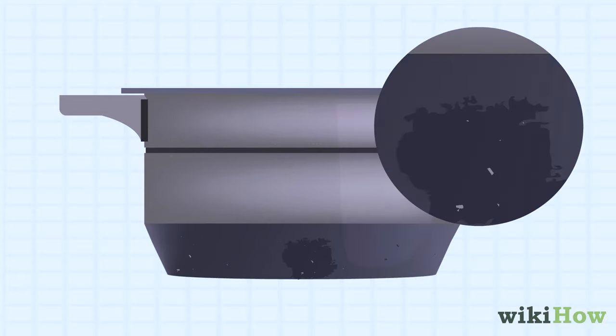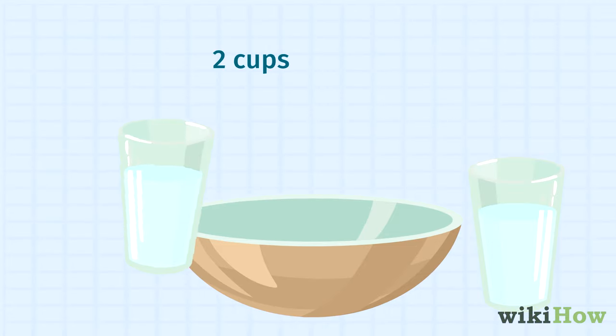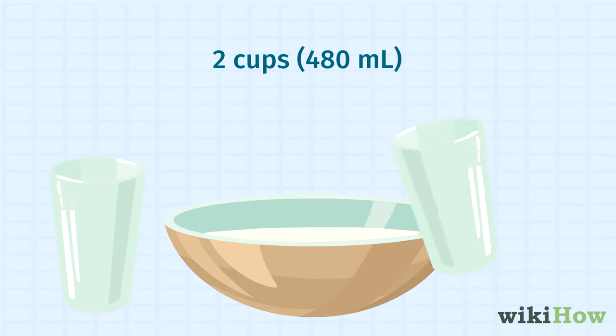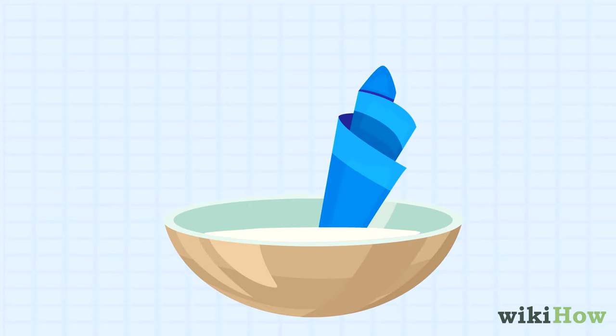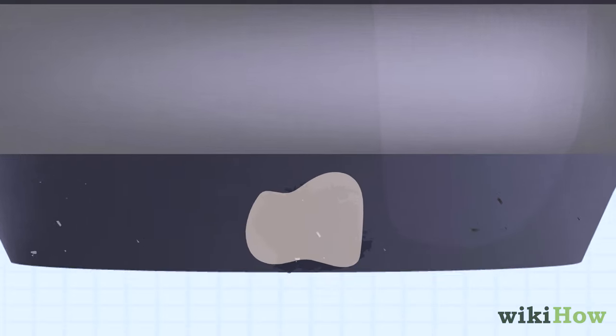If there is still oxidation, mix 1 tablespoon, 15 milliliters of white vinegar with 2 cups, 480 milliliters of warm water, and wipe down the aluminum with the mixture. The acid in the vinegar will help break down the oxidation.